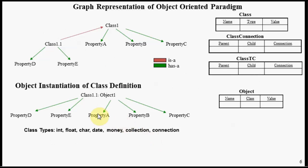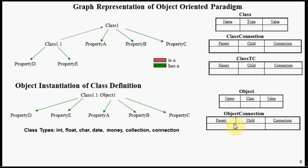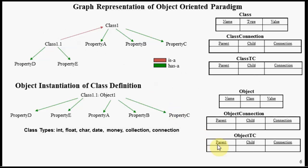This transitive closure table is automatically populated and managed whenever nodes or connections are added or deleted in the class graph. For the object graph, we have an object table representing the nodes — again a name-value pair with a class column representing the kind of class being instantiated, including the class properties. We also have an object connection table representing the connections as parent-child pairs with connection type, and a transitive closure table for the object graph, also automatically maintained.